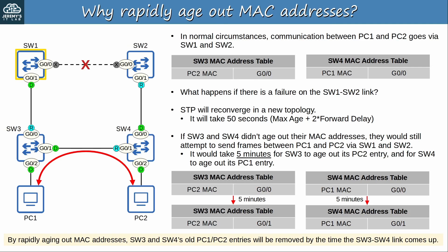By rapidly aging out MAC addresses, SW3 and SW4's old MAC address table entries for PC1 and PC2 will be removed by the time the SW3-SW4 link comes up. Then they will flood frames again and relearn the necessary MAC addresses. STP reconvergence will still take 50 seconds, but that's much better than 5 minutes. So that's why STP topology changes cause the switches to rapidly age out their MAC addresses. And in the STP toolkit video, we'll see how uplink-fast and backbone-fast can speed up STP reconvergence after a link failure like this.